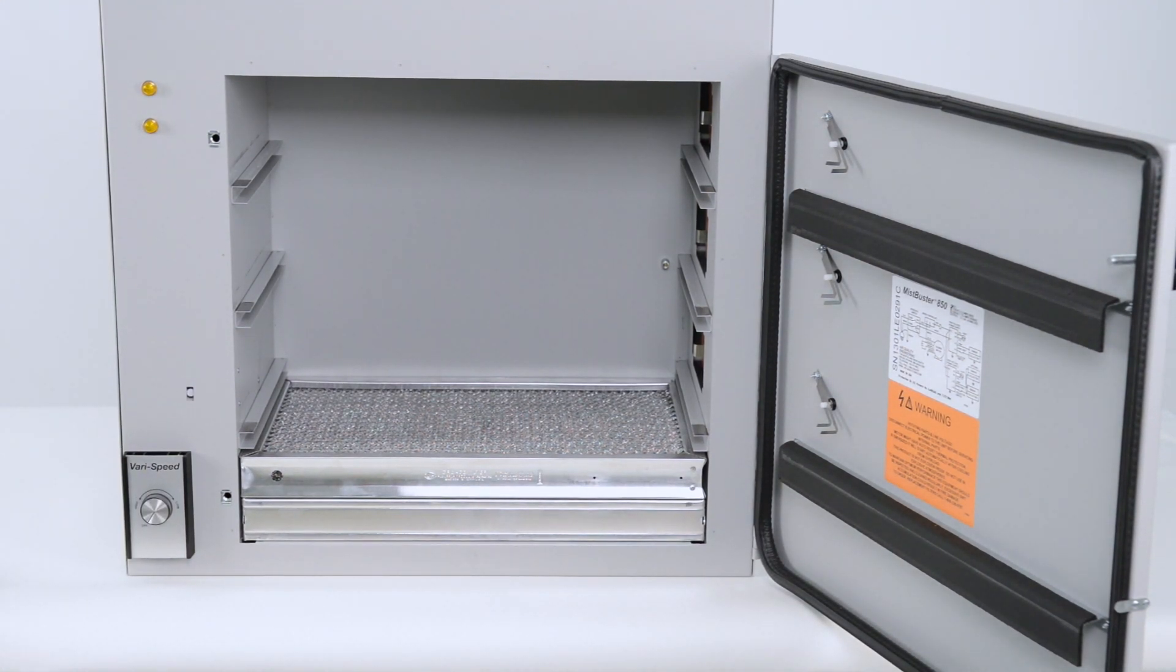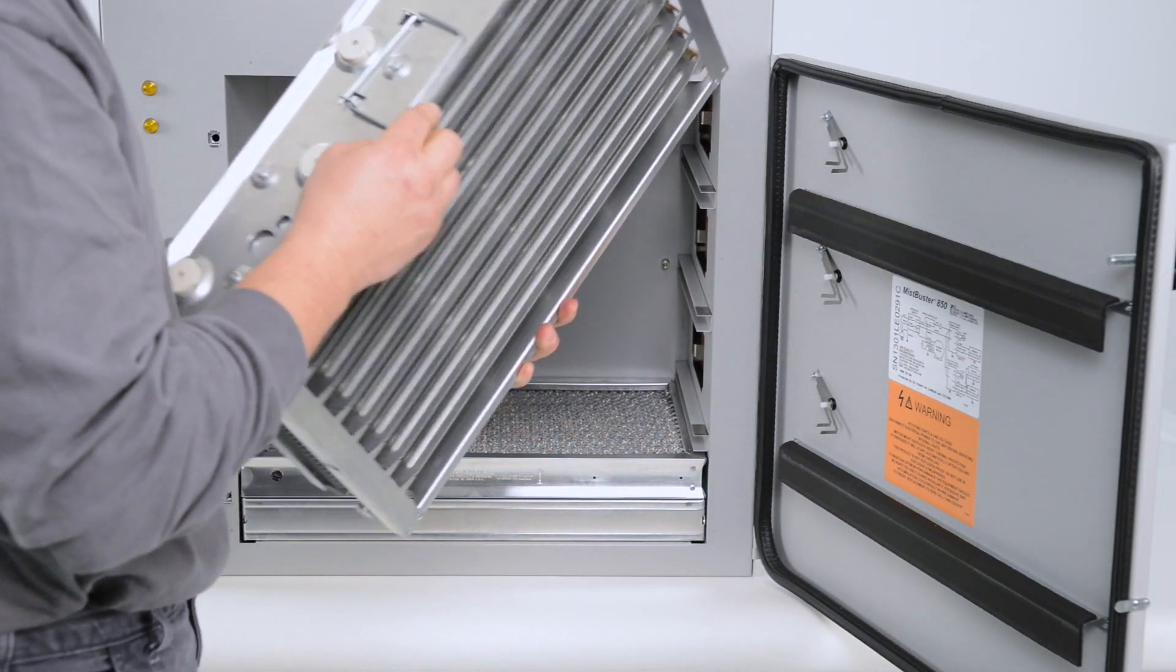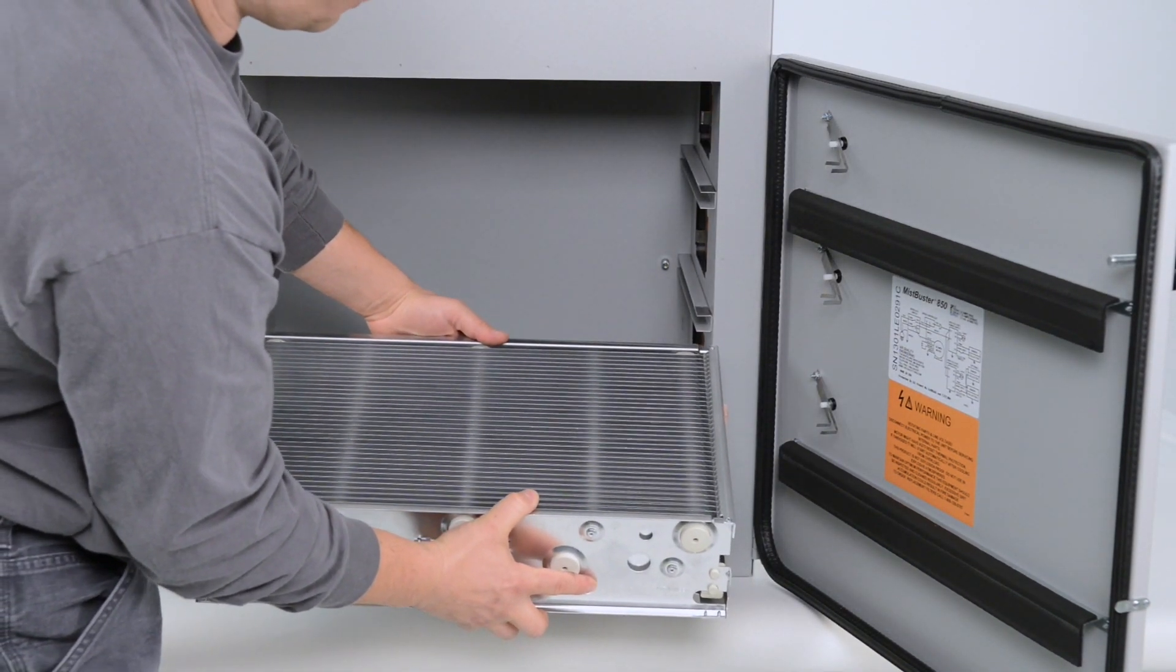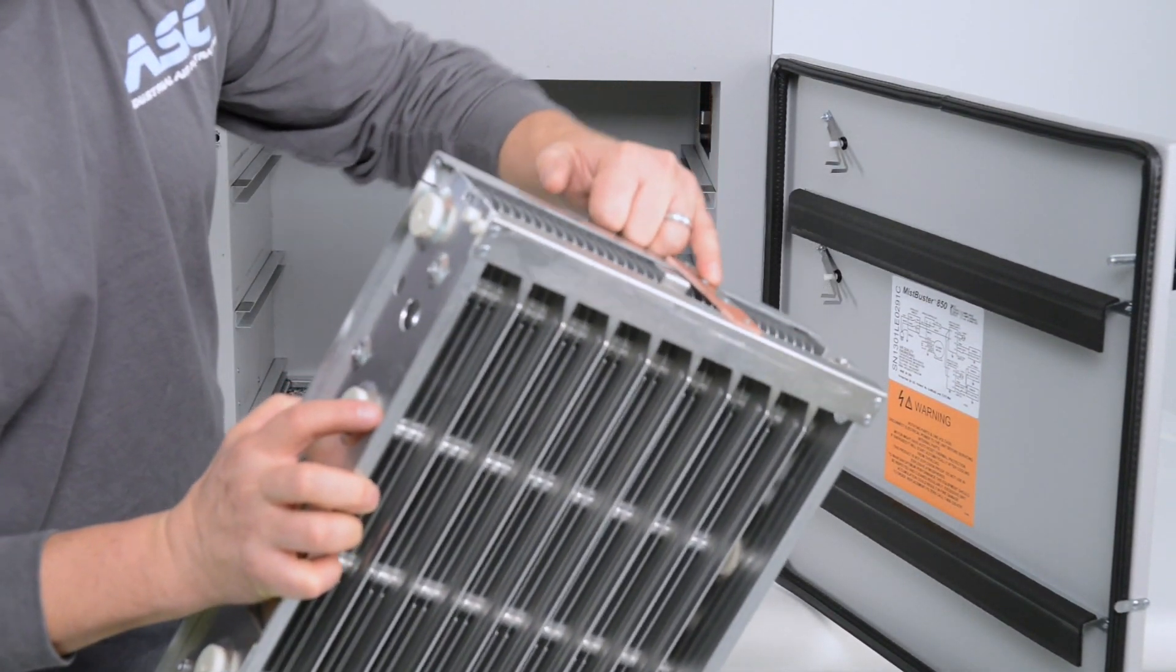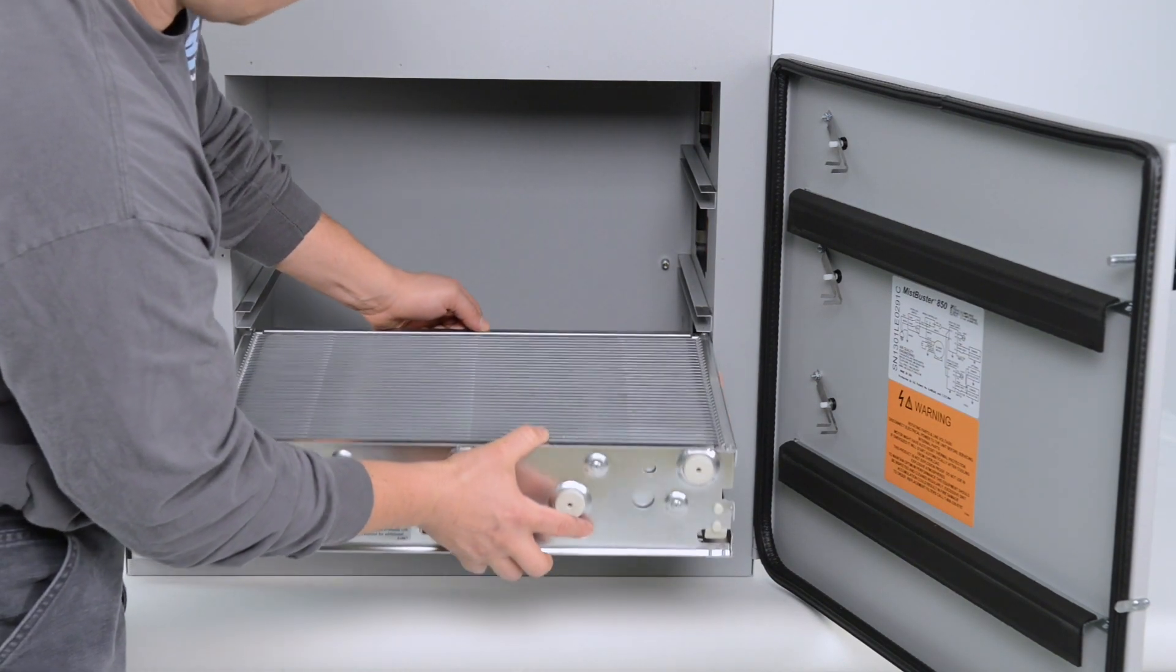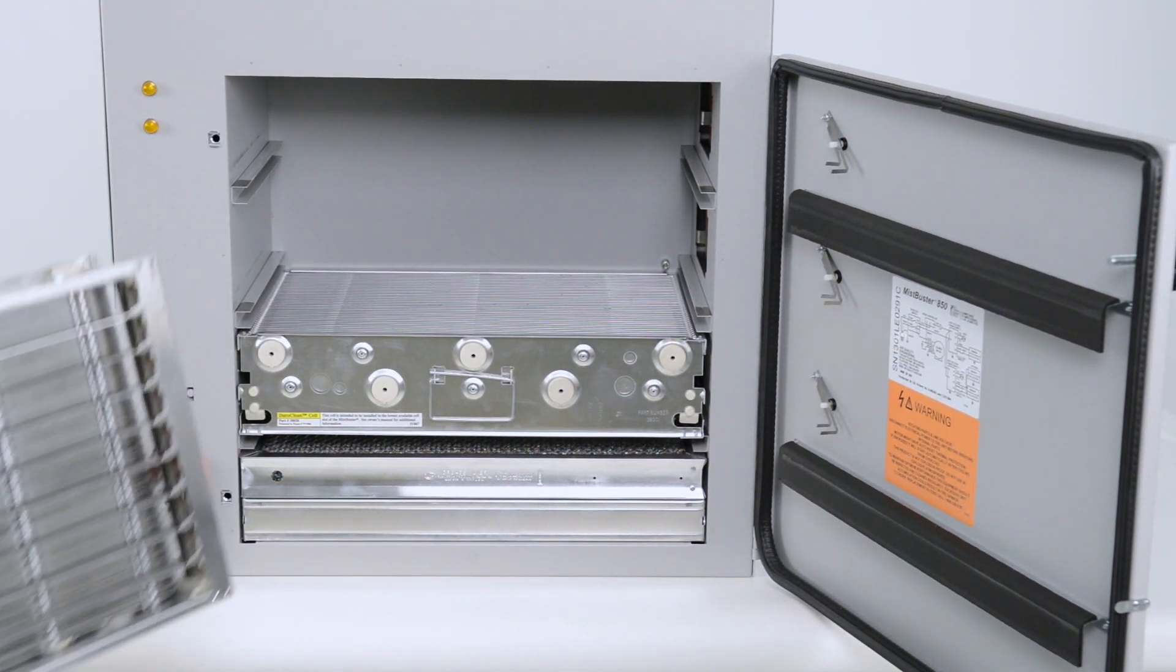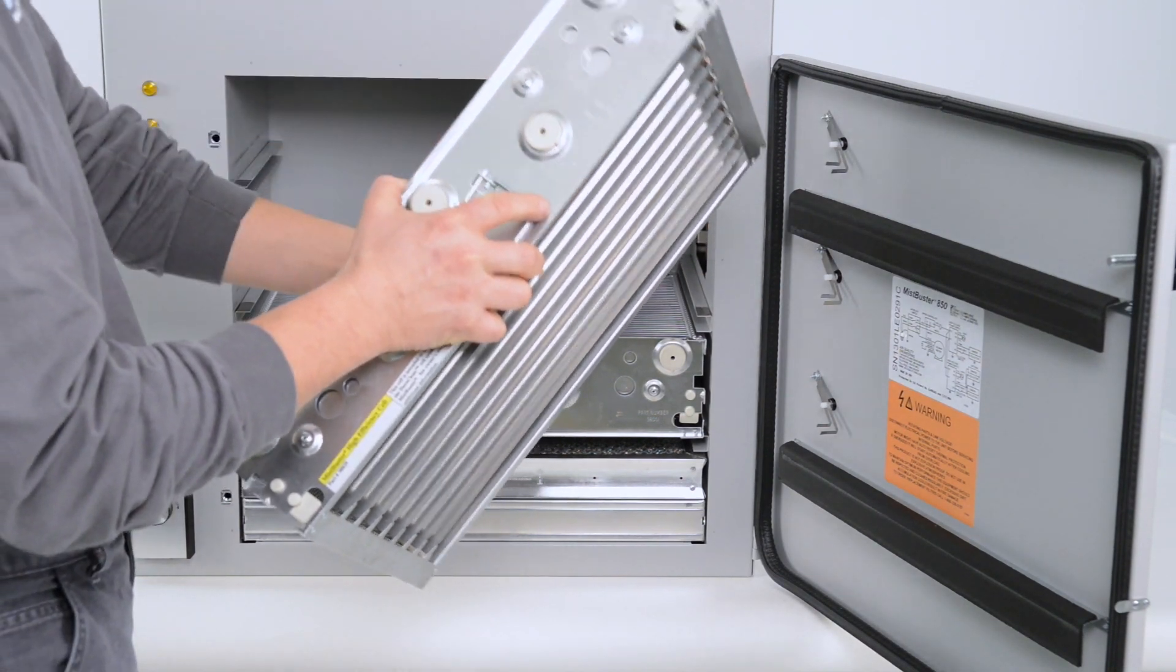Next, you will take the clean cell, and there is also an arrow indicating the air flow. You want to put that with the arrow pointing up, making sure that your connection points connect with your contacts inside the cabinet. We then insert the cells. Again, the arrow pointing up.